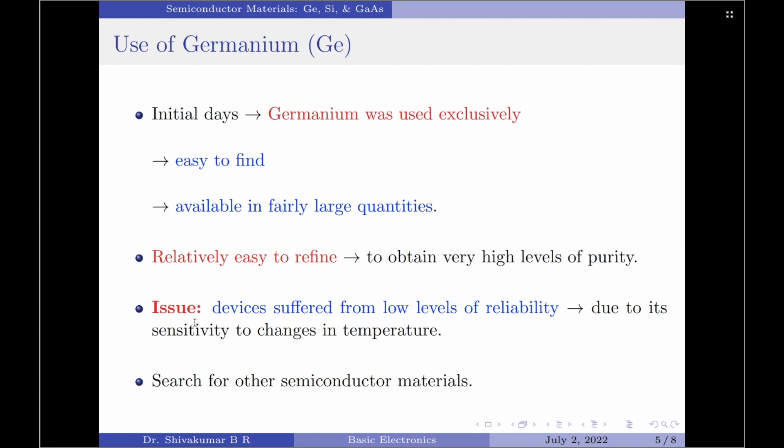However, there was an issue. It was found that diodes and transistors constructed using germanium as the base material suffered from low levels of reliability. This was found to be because of the sensitivity of the germanium to changes in temperature.